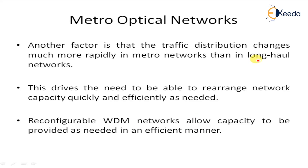Another factor is that traffic distribution changes much more rapidly in metro networks than in long-haul networks. This drives the need to be able to rearrange network capability quickly and efficiently as needed based on demand. Reconfigurable WDM — wavelength division multiplexing — networks allow capacity to be provided as needed in an efficient manner.